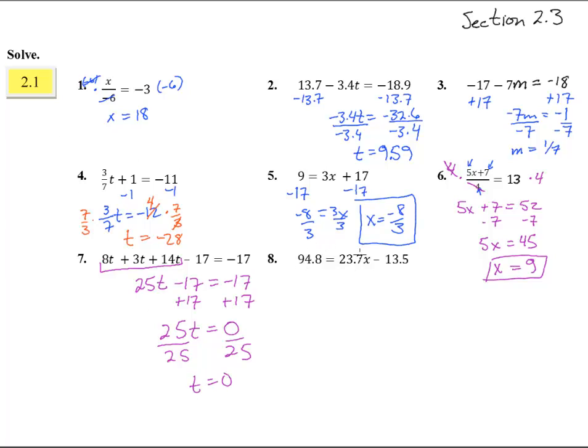And the last one. A lot of decimals here. But only two steps. We have to get rid of the 23.7 and the 13.5. Take care of the addition and subtraction first, and here we get 108.3 equals 23.7x. So divide by 23.7, and x ends up to equal 4.57.